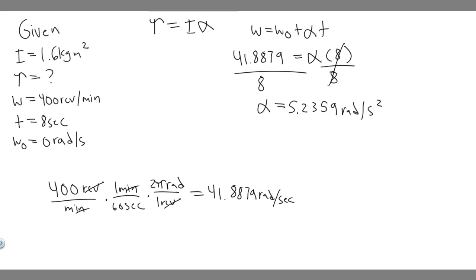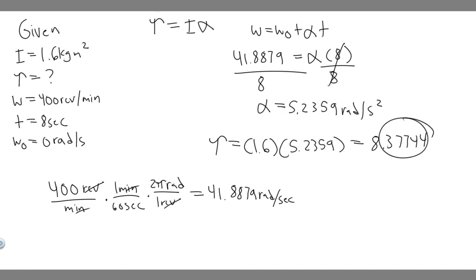Now we have both I and alpha, so we can solve for torque. Torque equals inertia times alpha, which is 1.6 times 5.2359. Going ahead and multiplying those gives 8.37744. Keep in mind the units: kilogram meter squared times radians per second squared gives Newton meters, which is the unit for torque. So the required torque is 8.37744 Newton meters. Hopefully you found this useful.